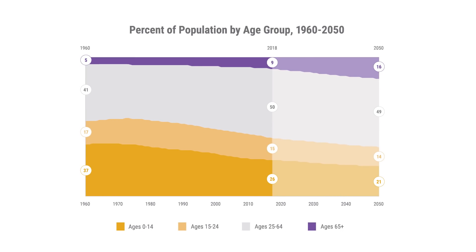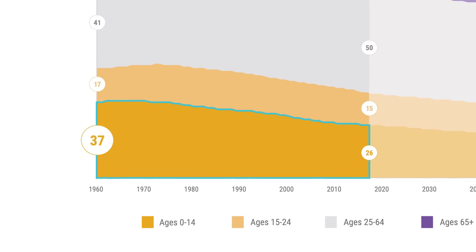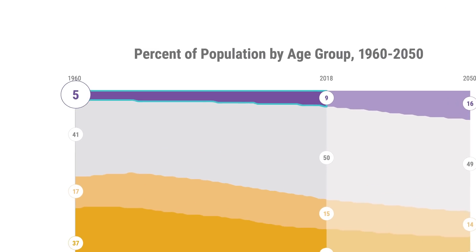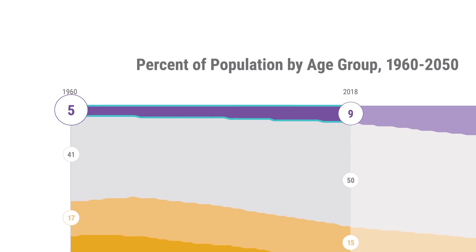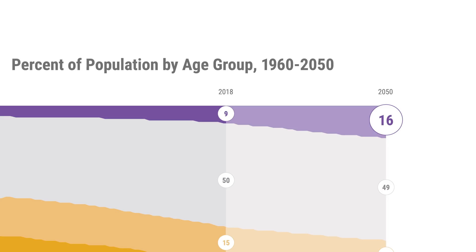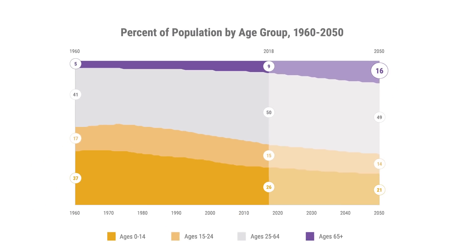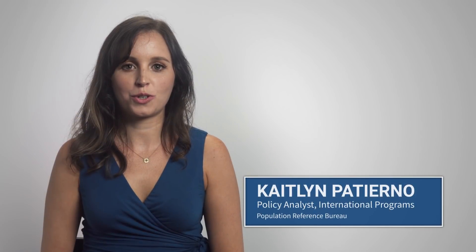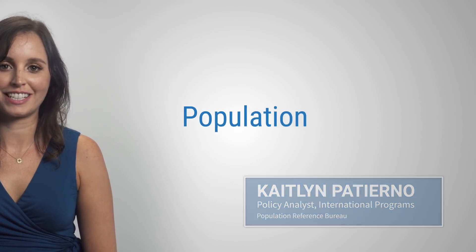Since 1960, the share of children ages 0 to 14 has declined from 37 to 26 percent of the total population. During the same period, the share of older adults ages 65 and over increased from 5 to 9 percent. Projections show that older adults will make up 16 percent of the global population by 2050.